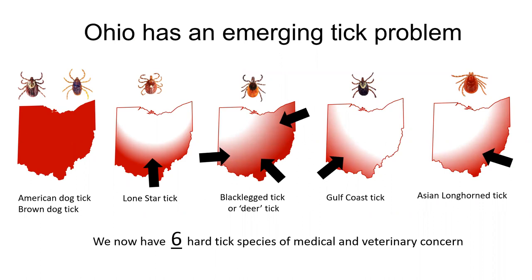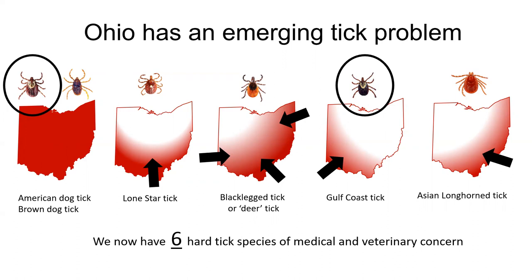Currently in Ohio, we have six tick species you should be aware of that are either established, such as the American dog tick on the left, or are expanding, as you can see for all the ticks that have maps with arrows. A good example is the Gulf Coast tick — we can see from this map that this tick is expanding from the southwestern parts of the state. Each of these ticks prefers their own set of hosts — people, animals, or both — and can cause their own respective diseases.